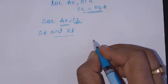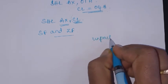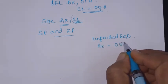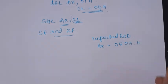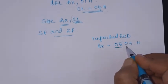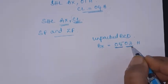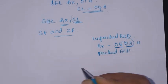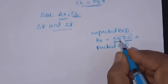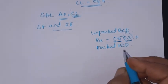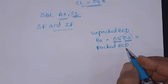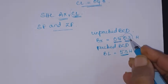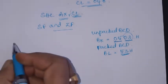Let's see this with an example. Suppose we have an unpacked BCD value 0503 in the BX register — this is unpacked BCD because in one byte only one BCD digit is stored. We want to convert it to packed BCD, meaning we want the result as 53H in BL, where one byte contains two decimal digits.